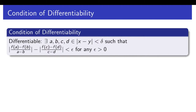Another condition for differentiability is mathematically defined on the screen. What that essentially means is that you can put a non-zero lower bound on the difference between two slopes. If you take points a and b — which looks very similar to delta y over delta x — similarly c and d, and you take the absolute value of the difference between them: if that value is less than any epsilon greater than zero, then it should be differentiable. However, if you can put a non-zero lower bound — if the difference is actually greater than epsilon — then it is not differentiable.